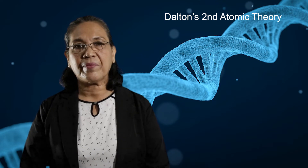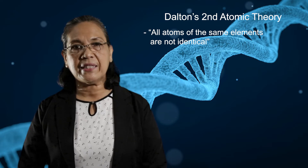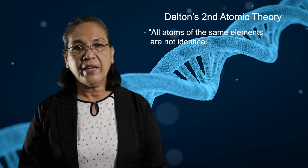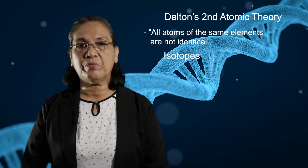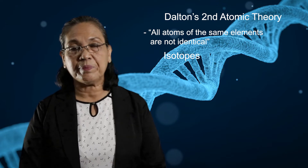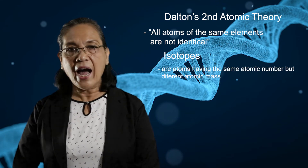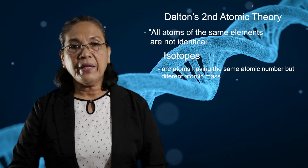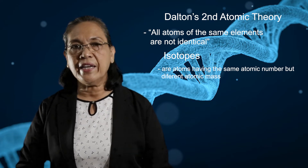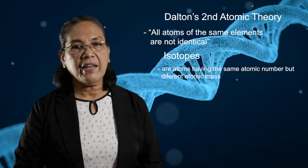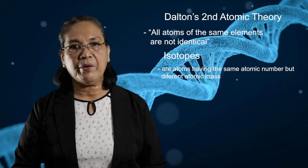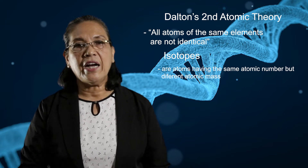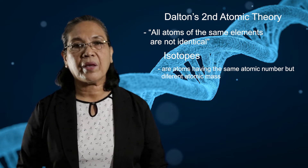Going back to Dalton's second atomic theory, in which he said that all atoms of the same element are not identical — it is because of the presence of isotopes. An isotope is an atom having the same atomic number but different atomic mass. The weighted average atomic mass of a naturally occurring isotope of an element is called the atomic weight. The atomic weight of an element is usually a decimal rather than a whole number.